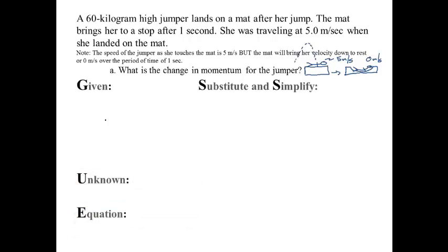Now I think we have enough information. We have a mass of 60 kilograms. We have a velocity initial of 5 meters per second. We have a velocity final of 0 meters per second. And the question asks what is the change in momentum. So we are looking for delta momentum and that is in question mark kilograms times meters per second.